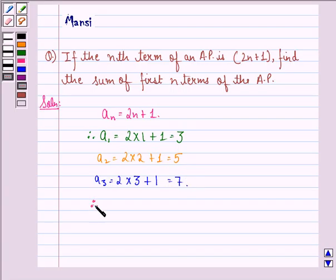Therefore, the common difference, that is, d is equal to a_2 minus a_1, that is equal to 5 minus 3, and that is equal to 2.